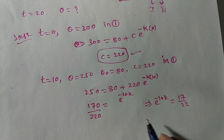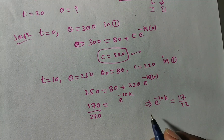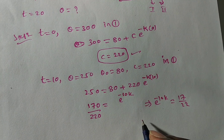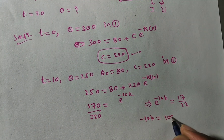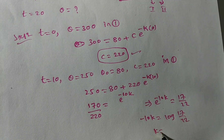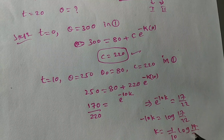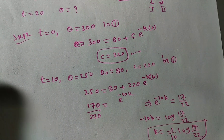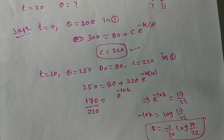To isolate K, apply logarithm on both sides. Since log e is 1, we get minus 10K equals log of 17 by 22. Therefore K equals minus 1 by 10 times log of 17 by 22. You can simplify this using a calculator or keep it in log form.